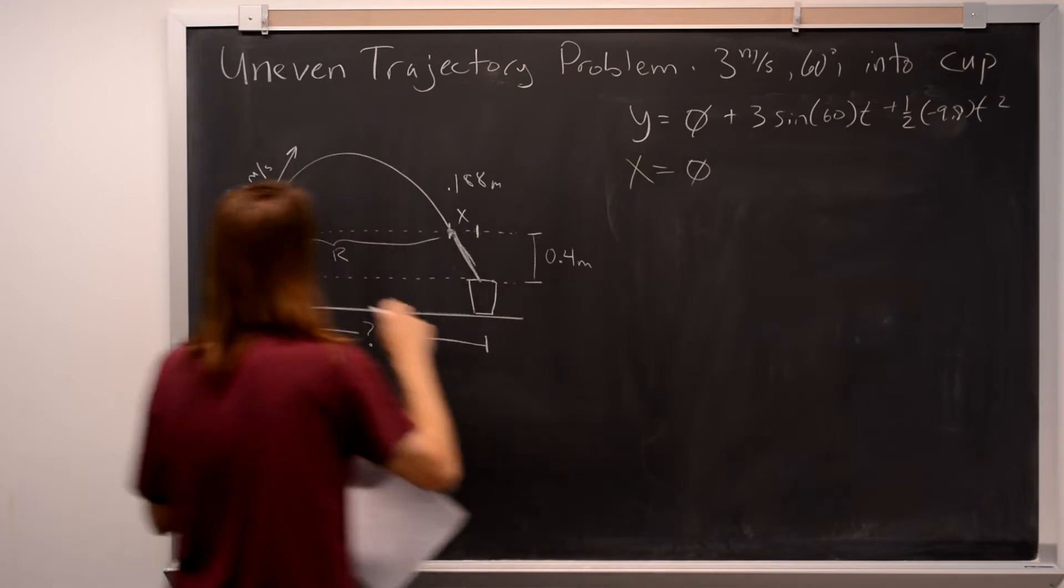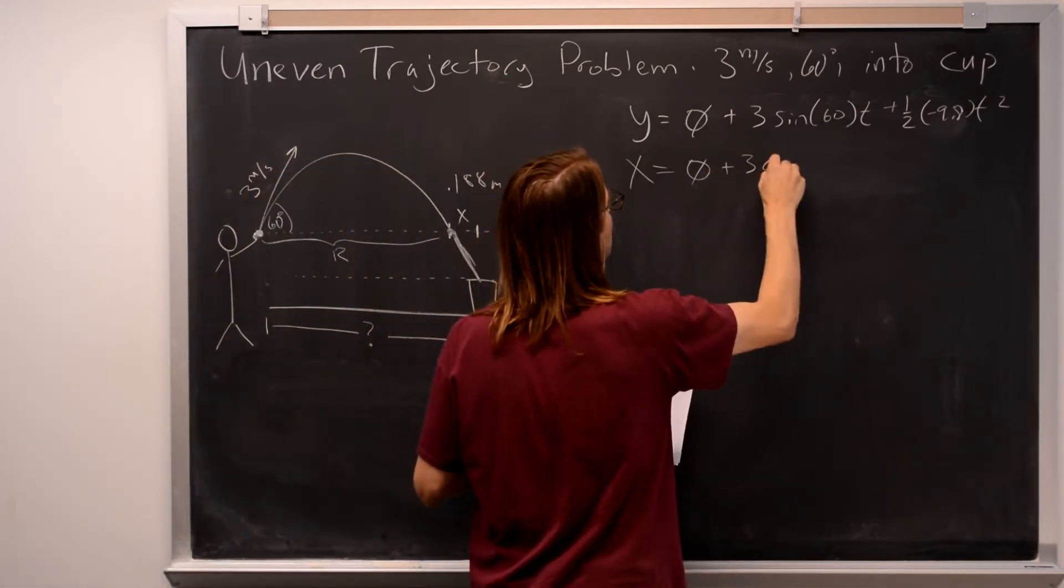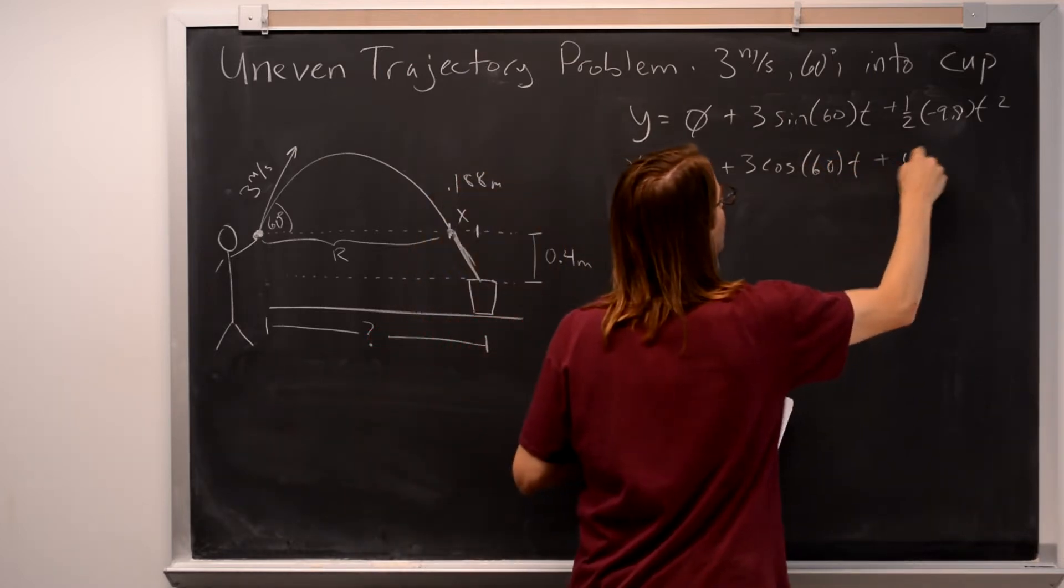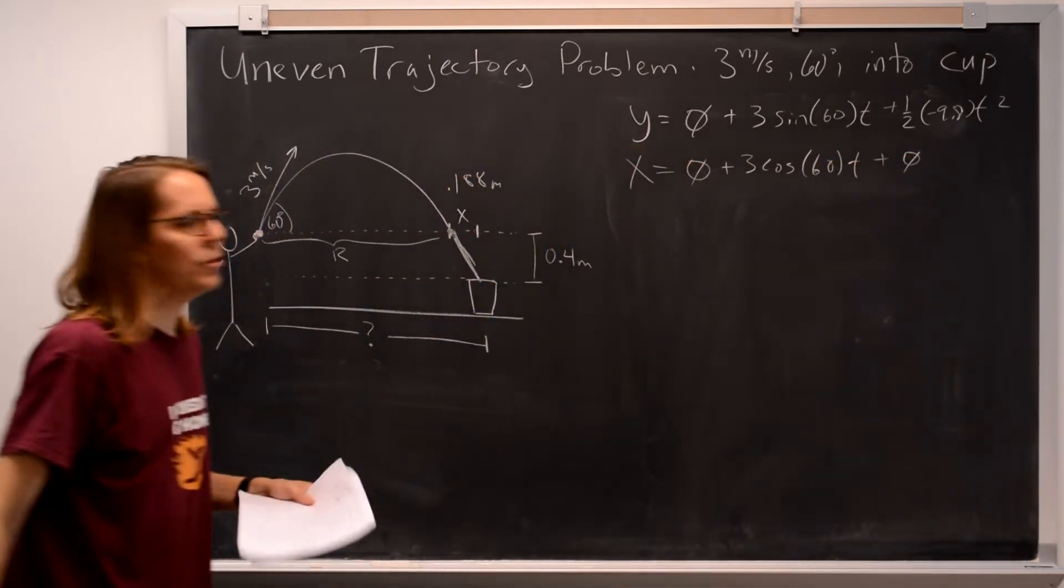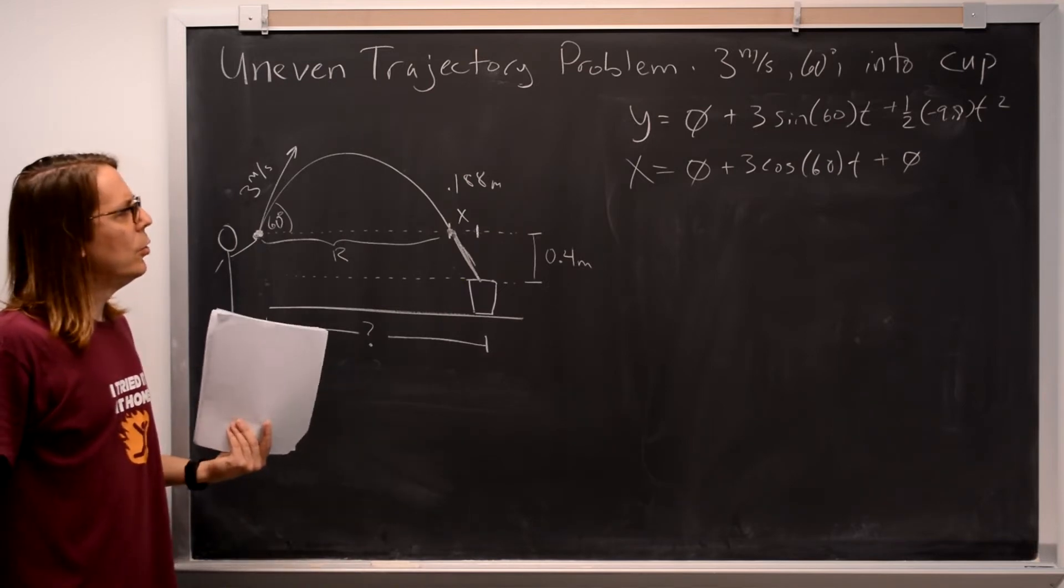We could write x. x also, we said, starts at the origin, plus 3 cosine of 60 times t plus 0 because there's no acceleration in the x.